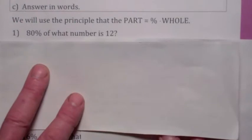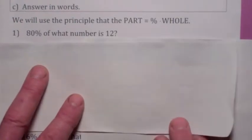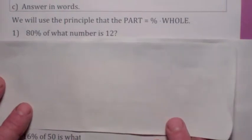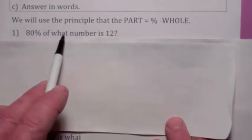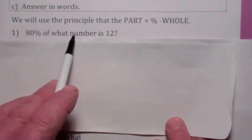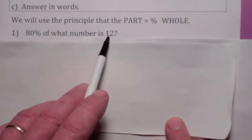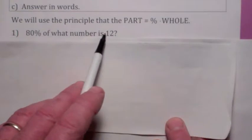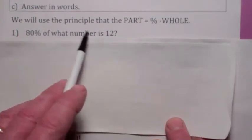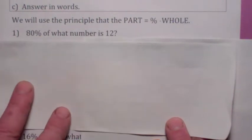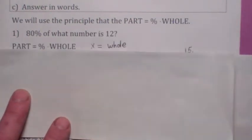Take a look at this problem right here. It says, 80% of what number is 12? So you're reading this sentence, they're asking you 80% of what number. So the what number is the variable. Now, the part is the smaller amount. So isn't this 80% of this number? So this would be the part, this would be the percentage, and the what number, that would be the whole.